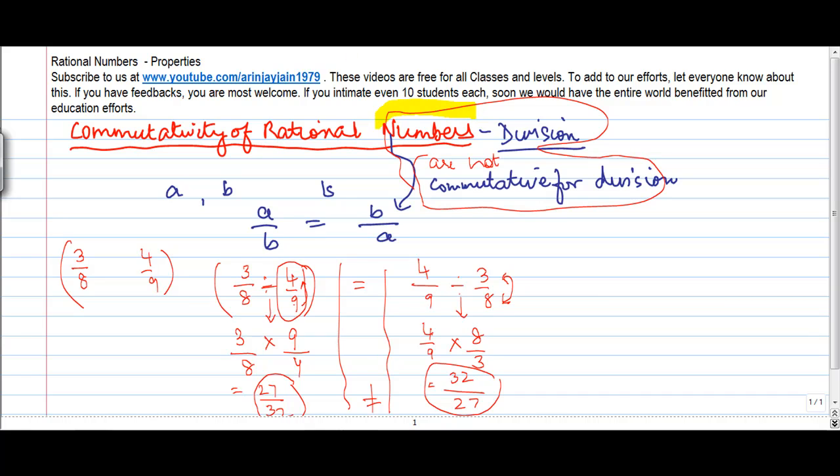This is the rule which comes out. Rational numbers are not commutative for division. So a divided by b is not equal to b divided by a for any two rational numbers a and b.